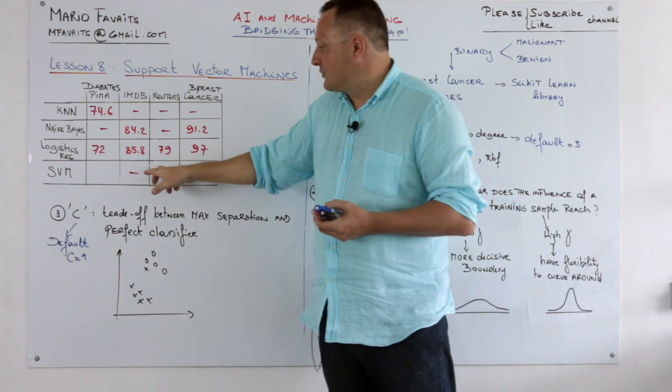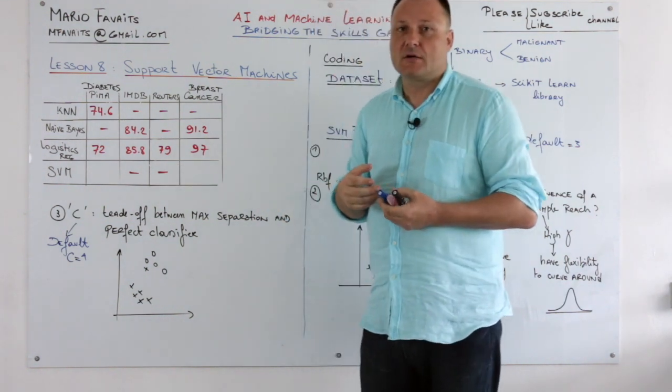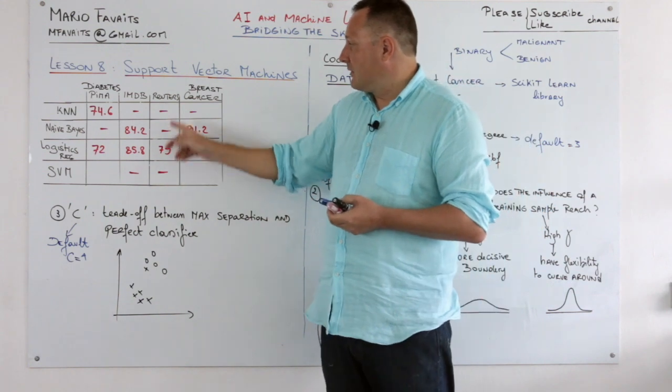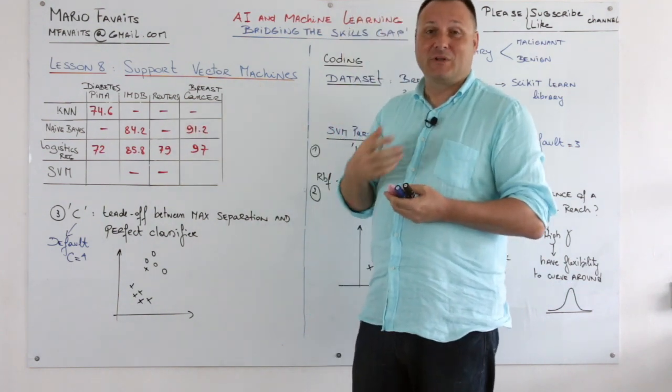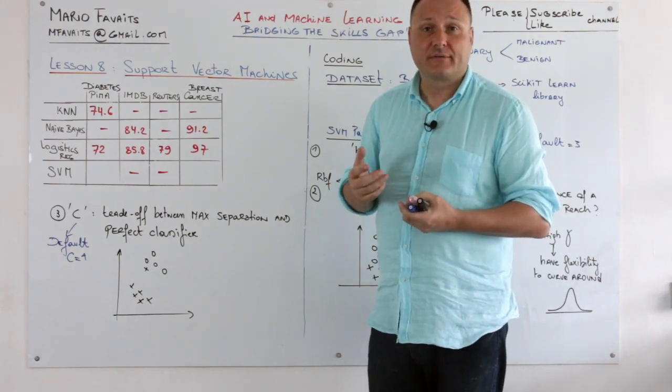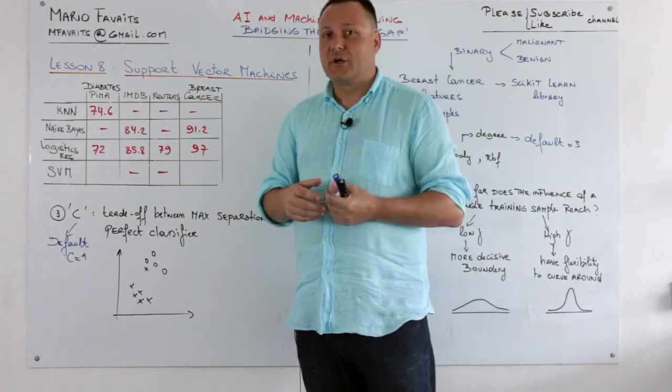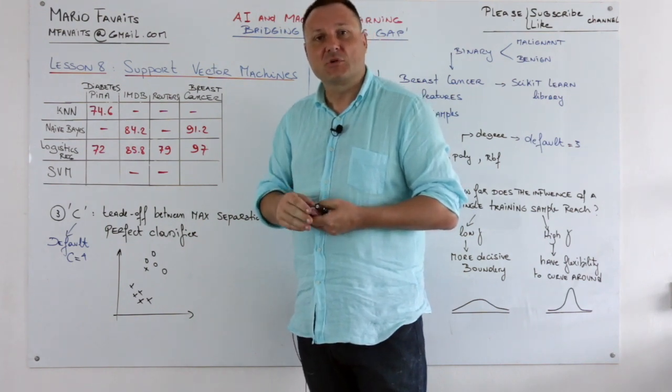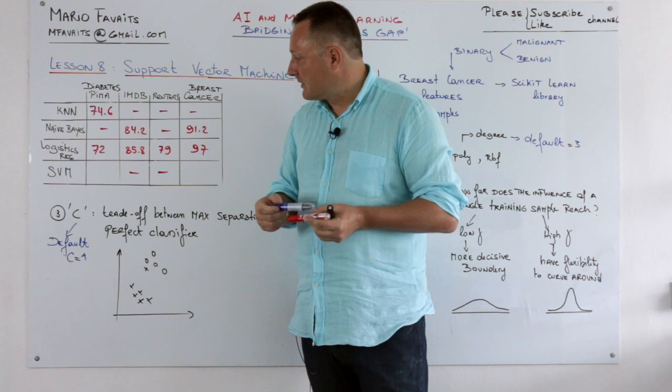We don't do these two mainly because it's a lot of calculation. For example, on the Reuters data set multi-class classification, I had this thing running for hours and hours. So we don't want to go there, especially if we don't have the right machinery to process all these calculations.